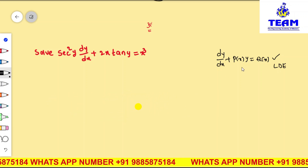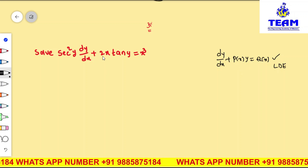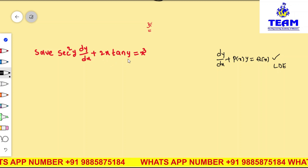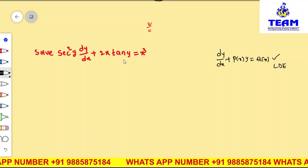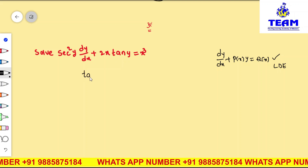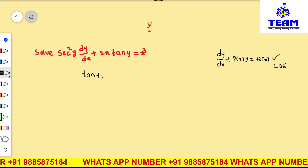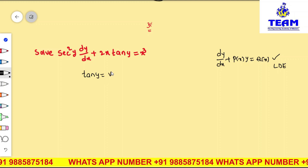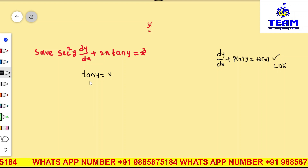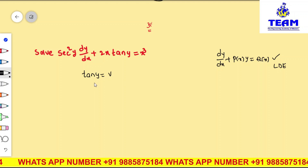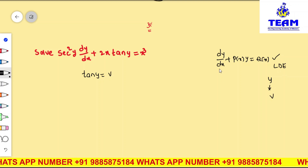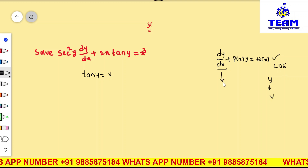So we go for the substitution method, also called change of variables. In this equation, in place of y we have tan(y). So let us consider v = tan(y) as a new variable, changing from y to v.